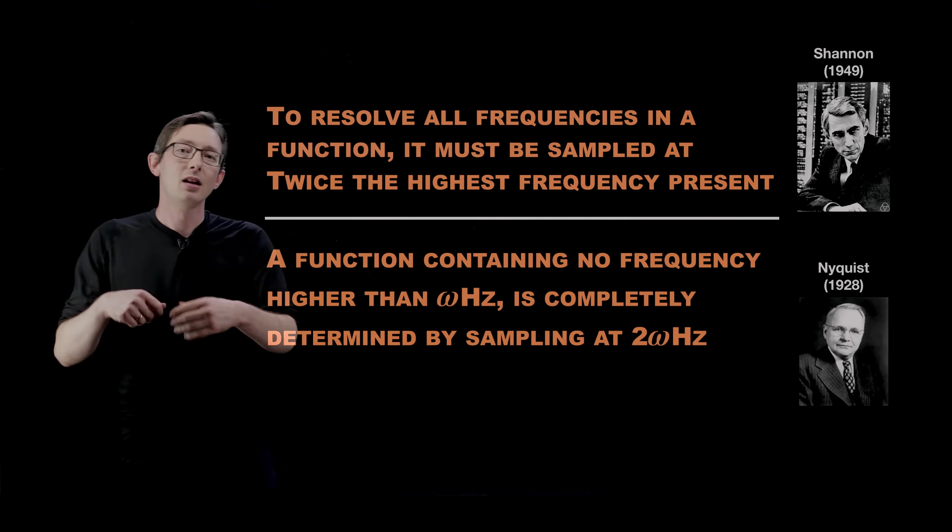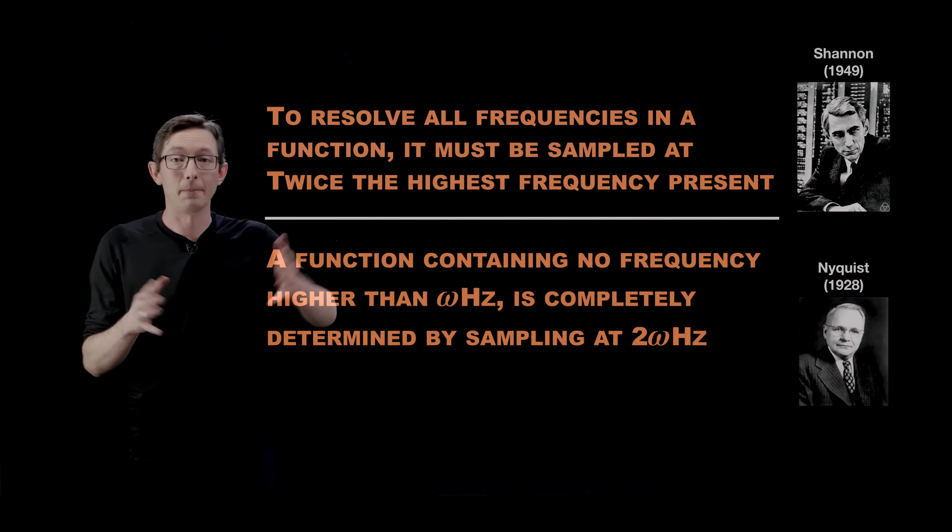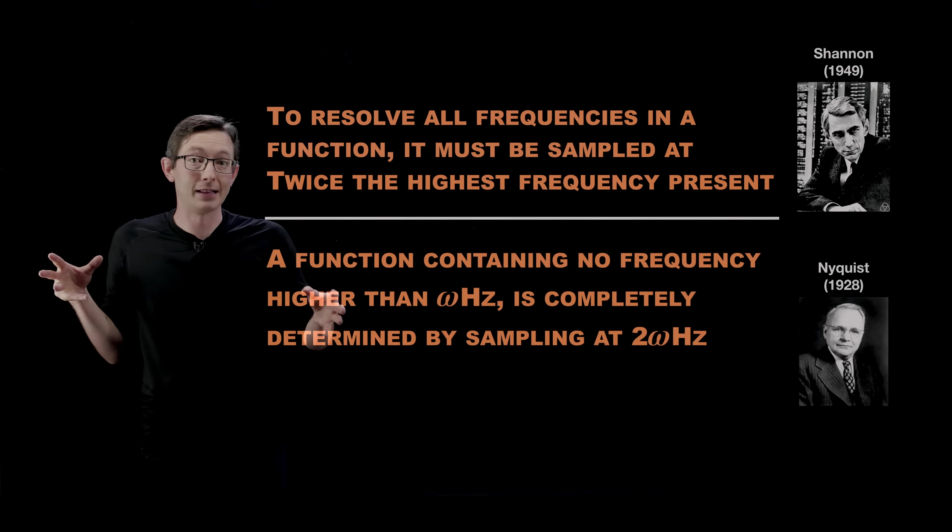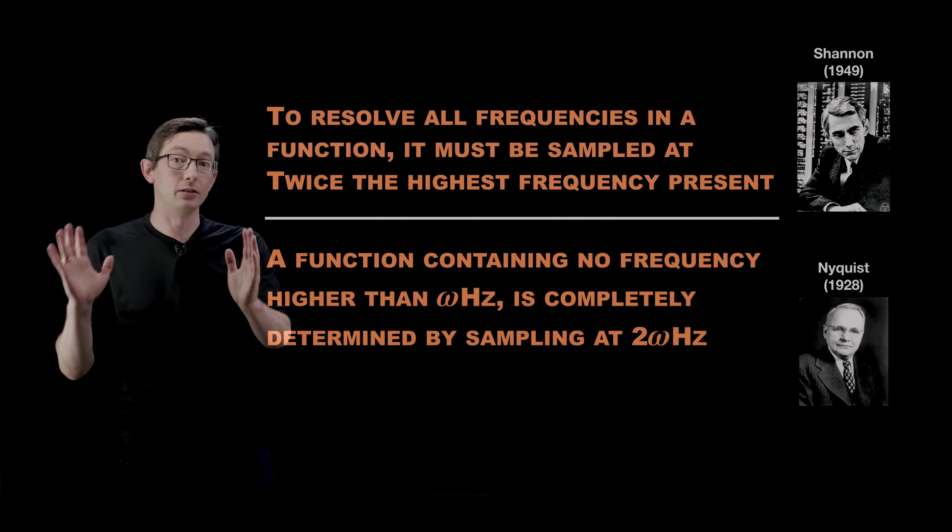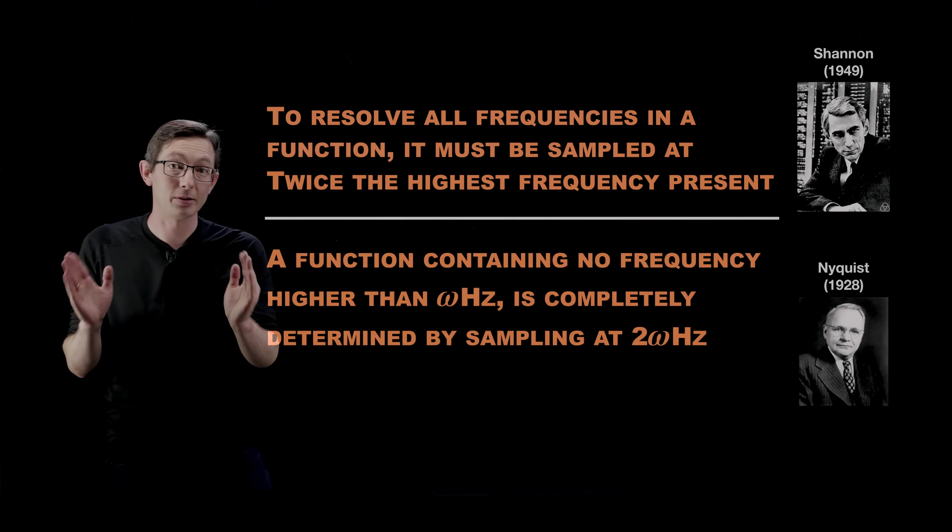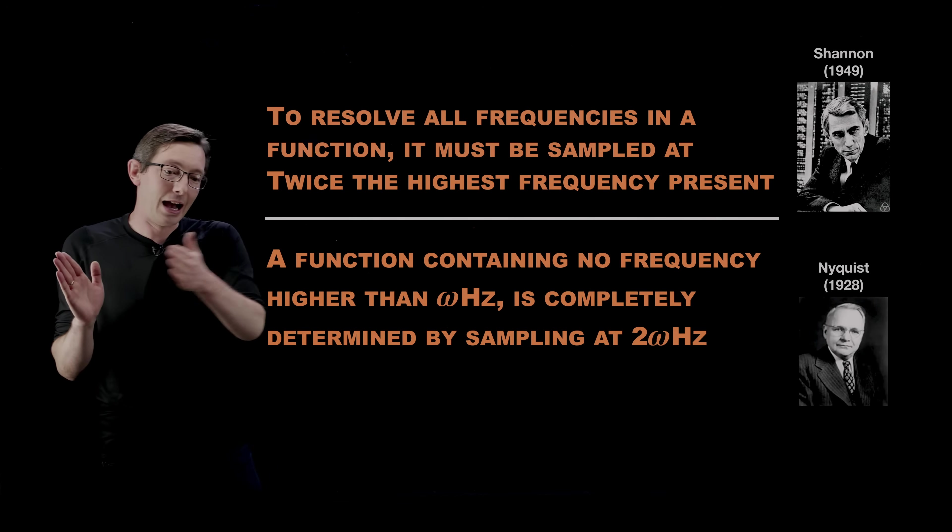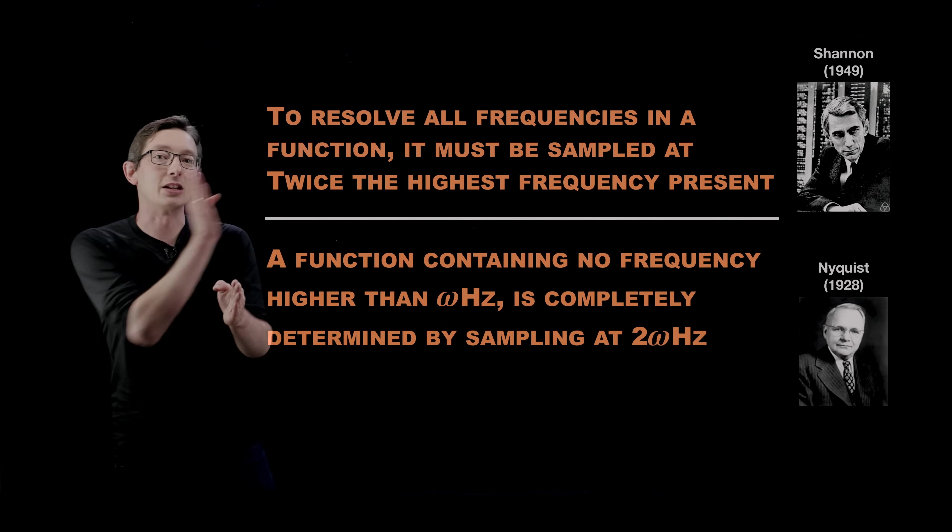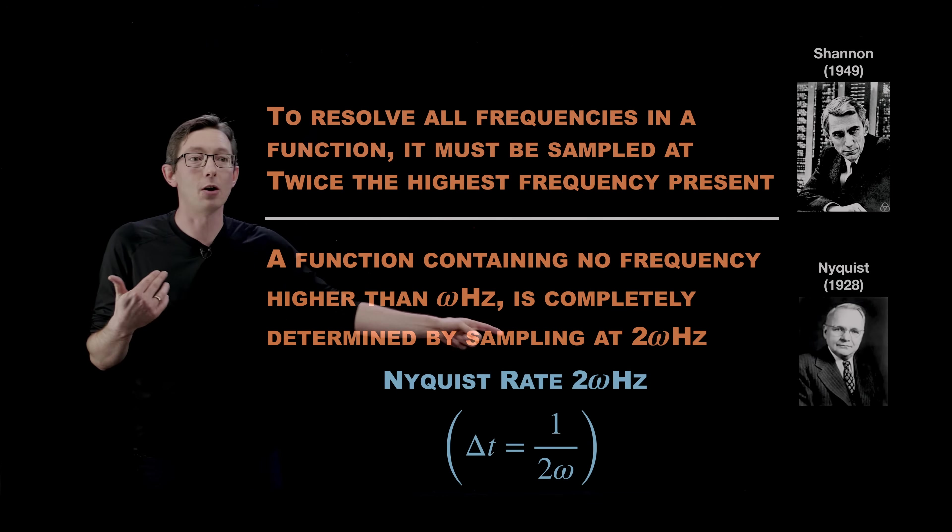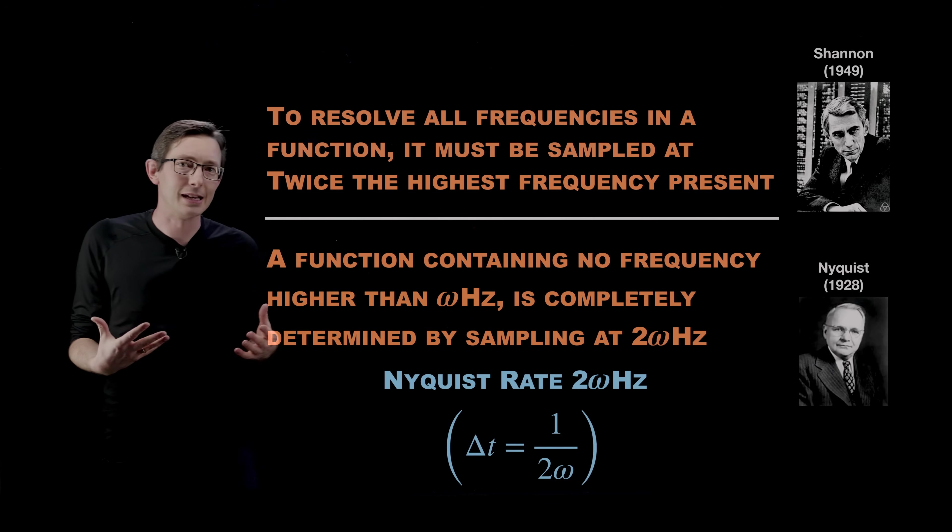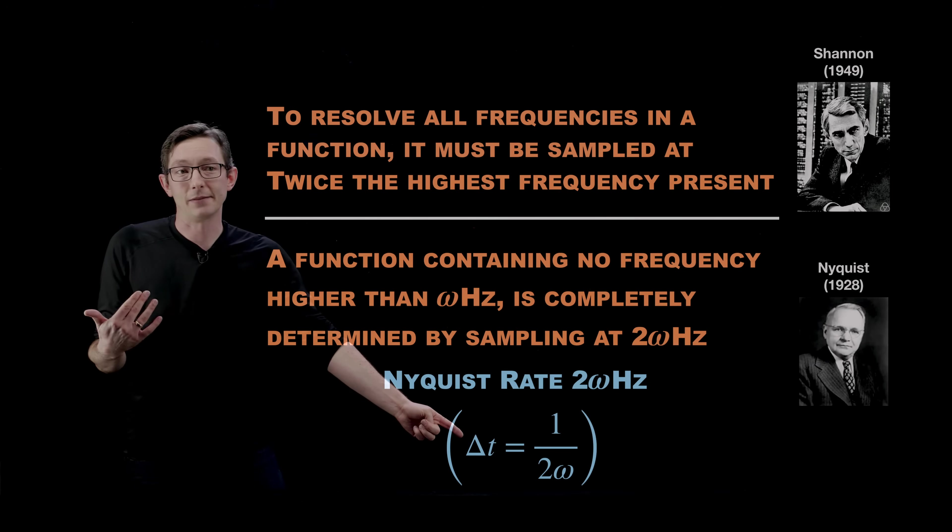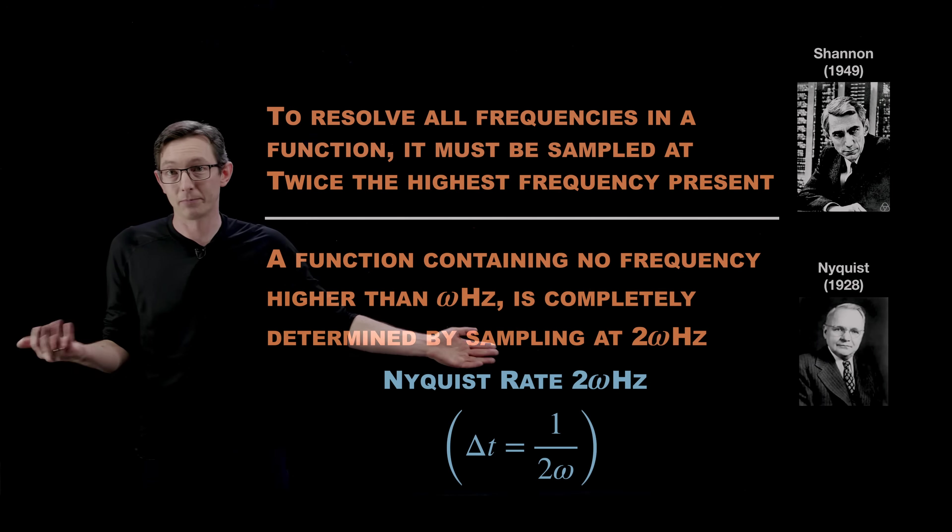And we're used to thinking about functions like an audio signal. You can take its Fourier transform and it's got a power spectrum that tells you what frequencies are active in that signal. And if you want to perfectly reconstruct that signal in Fourier, remember we can compress that signal and send that information and decompress it. If you want to perfectly represent that information and you have a highest frequency you care about, you have to sample at twice that highest frequency. And so that establishes what's known now as the Nyquist rate, which is 2 omega measured in hertz. Or alternatively it says if you care about a frequency omega, if that's the highest frequency you care about, you have to sample at least as fast as a delta T of 1 over 2 omega in seconds.